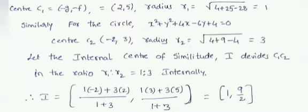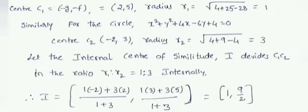The center of circle C₁ is (−g₁, −f₁) = (2, 5). The radius r₁ = √(g₁² + f₁² − c₁) = √(4 + 25 − 28) = √1 = 1.